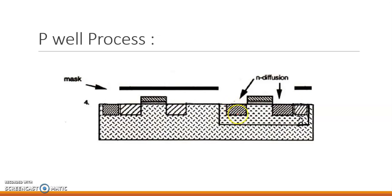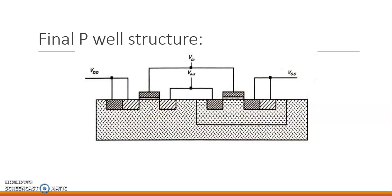In this way, the NMOS and PMOS are created. In the next step, we are going to do the connections. This terminal is the drain of NMOS and this is the drain of PMOS. This is the source terminal of PMOS, which is connected to VDD. This is the source terminal of NMOS, which is connected to ground. The gates of both MOSFETs are shorted, forming the input VIN. This is how we form a CMOS using the P-well structure.